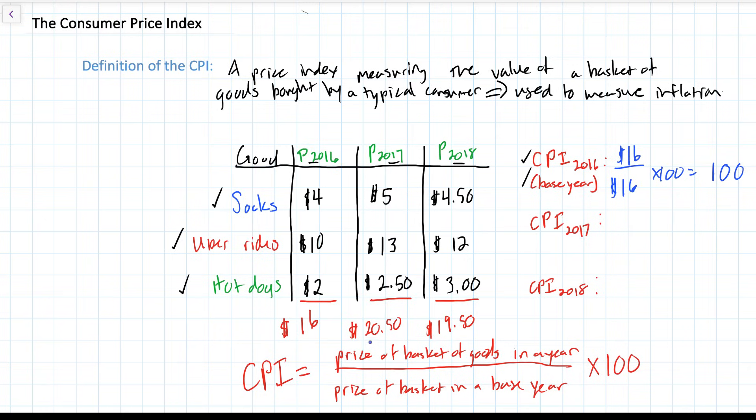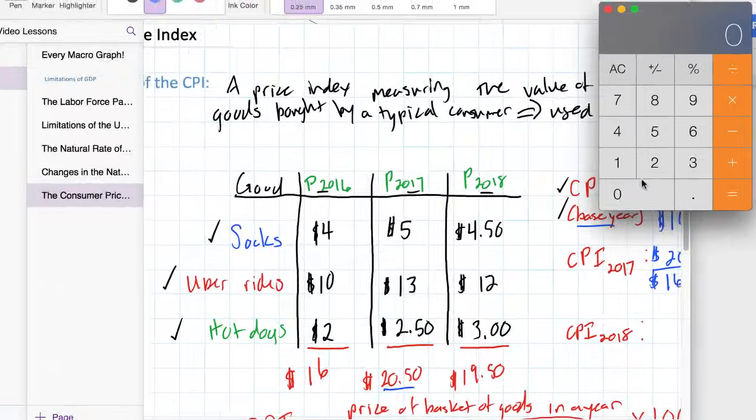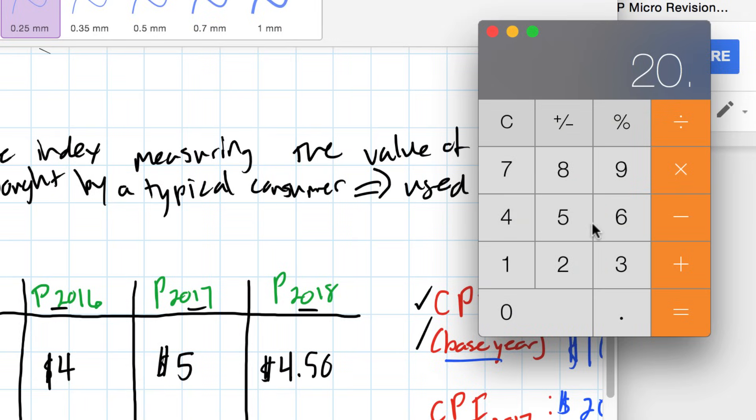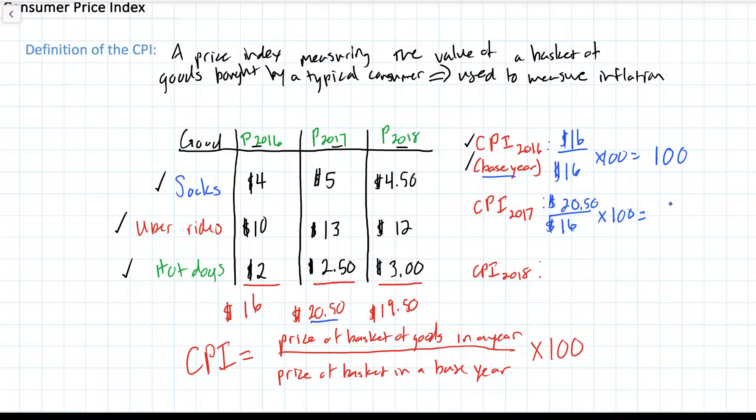For 2017, we had a price of $20.50. We can calculate the CPI by dividing the price of the basket of goods in 2017 by the price of the basket of goods in our base year of $16, and multiplying that result by 100. Let's do that calculation now. We've got $20.50 divided by $16 gives us 1.28, multiply that by 100, and we get 128.125. So the CPI for 2017 is 128.125.